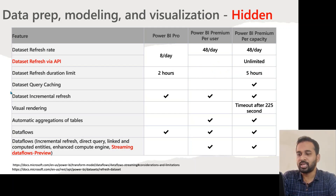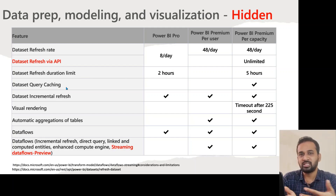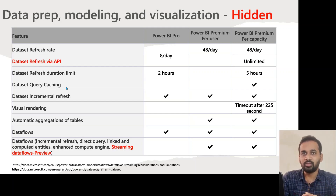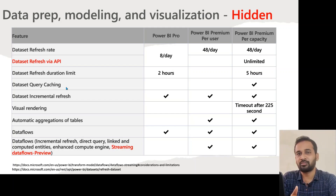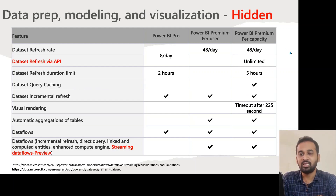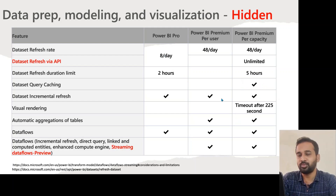Dataset query caching is a relatively new feature. If you are using an Import model, you can keep your cached data in the Power BI service memory, which increases the performance of your report when users interact with it. There is an option in the dataset settings for this. This option is only visible if you have Premium Per Capacity — Pro and PPU users will not see this feature.